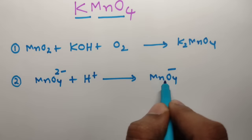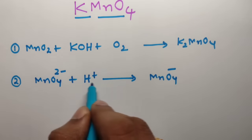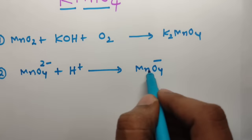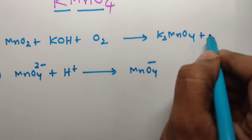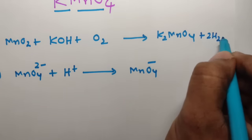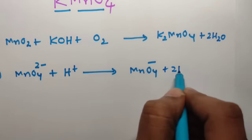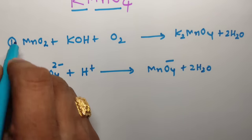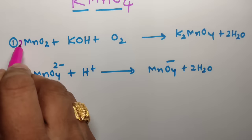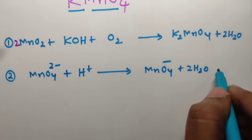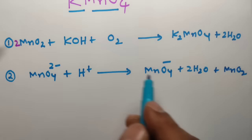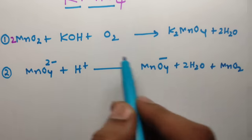In both cases, the byproduct is water - 2 moles of H2O. And starting with 2 moles of MnO2 involved, ending with 1 mole of MnO2 formed as a byproduct.